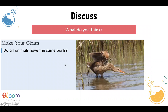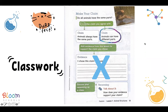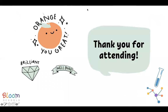We discussed: do all animals have the same parts? The kids realized after watching the videos that animals do not have the same parts. We did book page number 13 and answered the first part: make a claim — do all animals have the same parts? Circle the claim you agree with: animals always have the same parts, or animals can have different parts. The answer is of course animals can have different parts. And that's the end of our lesson — thank you for attending.